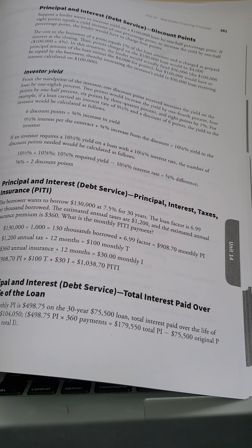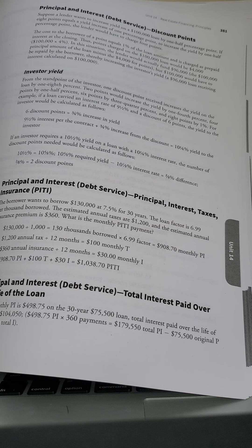If a loan carried an interest rate of nine and a half percent with six discount points, the yield would be calculated as follows. Six points — how many eighths would that be? Six-eighths, six pieces of the pie. That's three-fourths. Six-eighths equals 0.75.